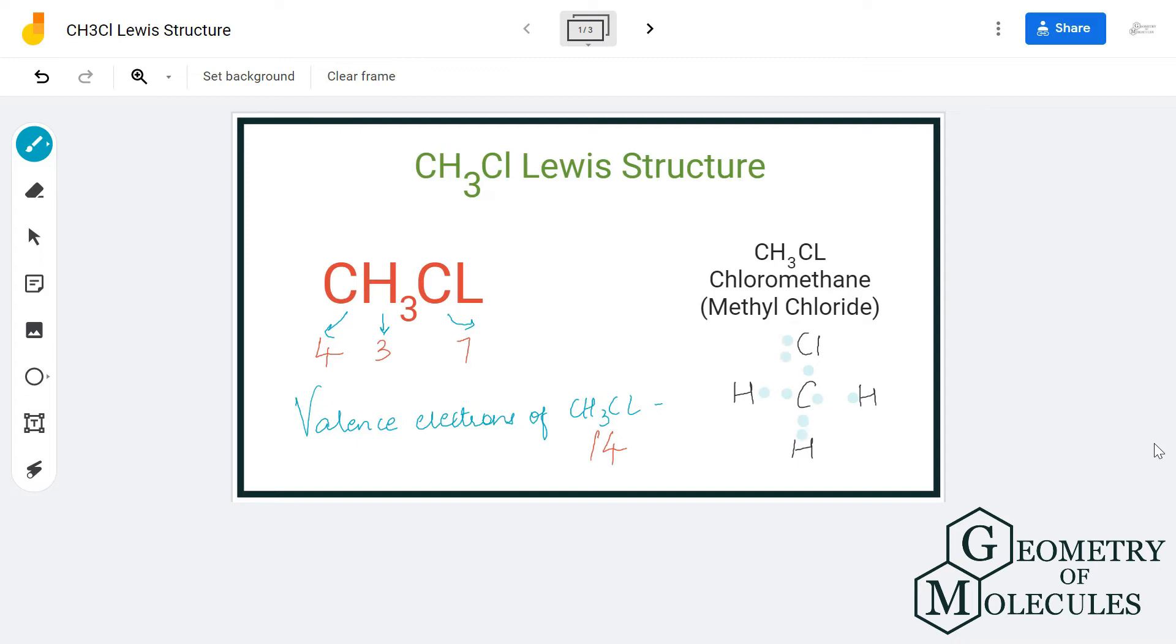Here, hydrogen atom needs two electrons to attain a stable structure, and all the hydrogen atoms will start sharing one electron of the carbon atom by forming bonds. Similarly, chlorine atom also needs one electron to complete its octet, so it will also share one valence electron of carbon atom.